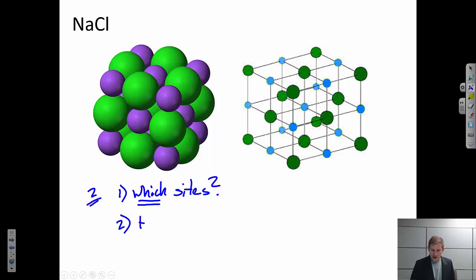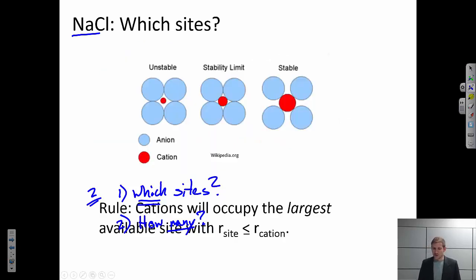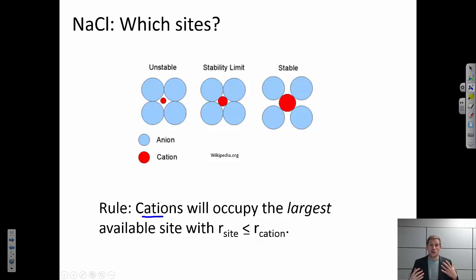So the second point then is how many? So how many of those sites are occupied? This ultimately comes down to the stoichiometry, how many anions per cation, and how many available sites are there in a particular lattice. So let's keep working through this example. The first question I said which sites? Now there's a rule, and that rule is that cations will occupy the largest available site that is less than or equal to their size. So let's think about that with a picture first and then we'll come back to the words.